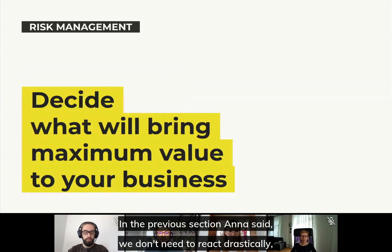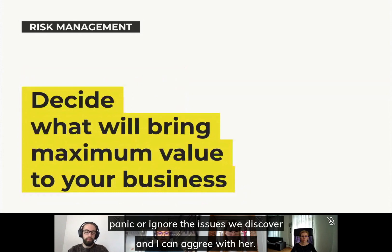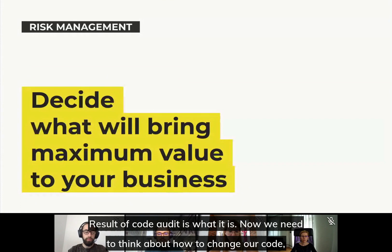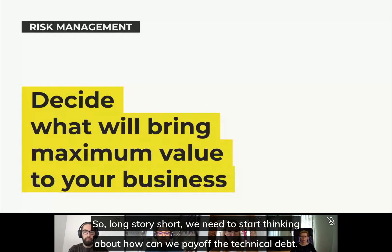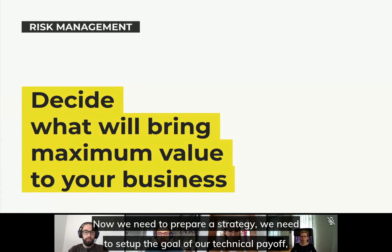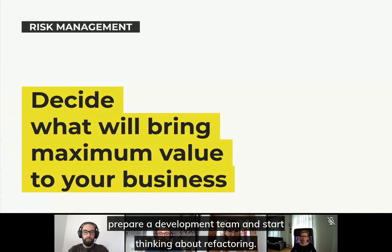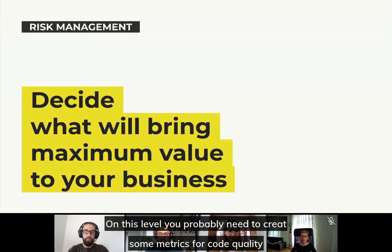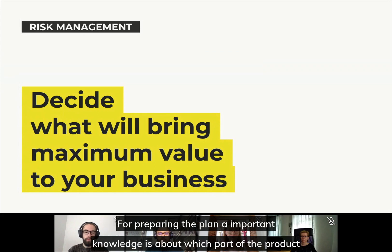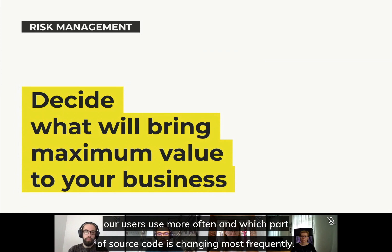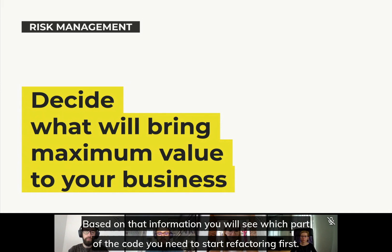We don't need to react drastically, panic, or ignore the issues we discovered. The result of a code audit is what it is — now we need to think about how to change our code to make it easier to introduce new features. Long story short, we need to start thinking about how we can pay off the technical debt. We need to prepare a strategy, set up the goal of our technical debt payoff, prepare a workshop with the development team, and start thinking about refactoring. You probably need to create some metrics for code quality to check if our changes are moving the code to be more maintainable. Important knowledge for preparing the plan is which parts of the product our users use more often, and which parts of the source code are changing most frequently — based on that information, you will see which part of the code you need to start refactoring first.